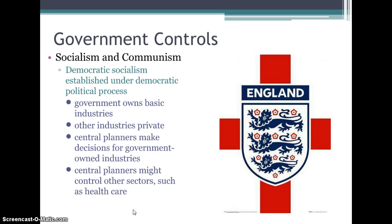In socialist and communist type governments with a command economy, there's something called democratic socialism, which is established under a democratic political process. The government owns the basic industries and other private industries. Central planners make decisions for government-owned industries and may control other sectors like health care. That's why a lot of people have criticized President Obama for having socialist ideas because of his health care plan, Obamacare.